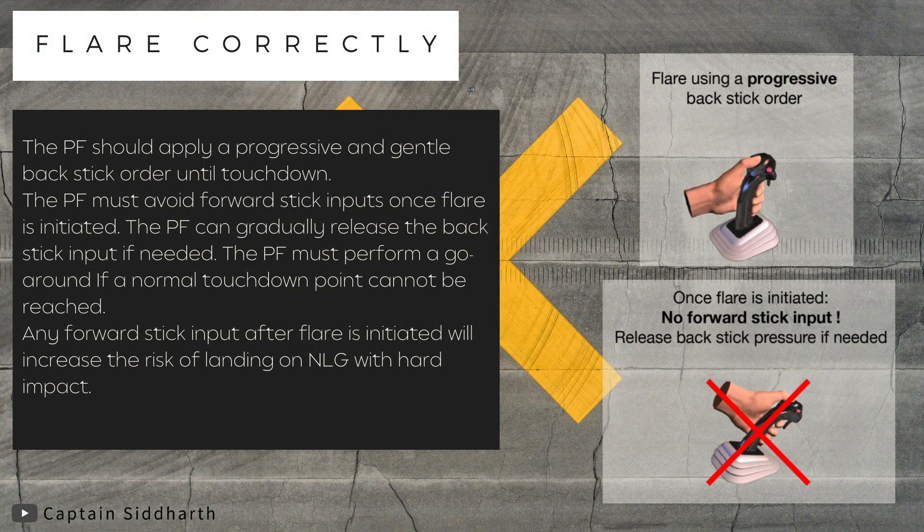Flare correctly. The pilot flying should apply a progressive and gentle back stick input until touchdown. The pilot flying must avoid forward stick inputs once flare is initiated, but can gradually release the back stick input if needed. The pilot flying must perform a go-around if a normal touchdown point cannot be reached. Any forward stick input after flare is initiated will increase the risk of landing on the nose landing gear with hard impact.